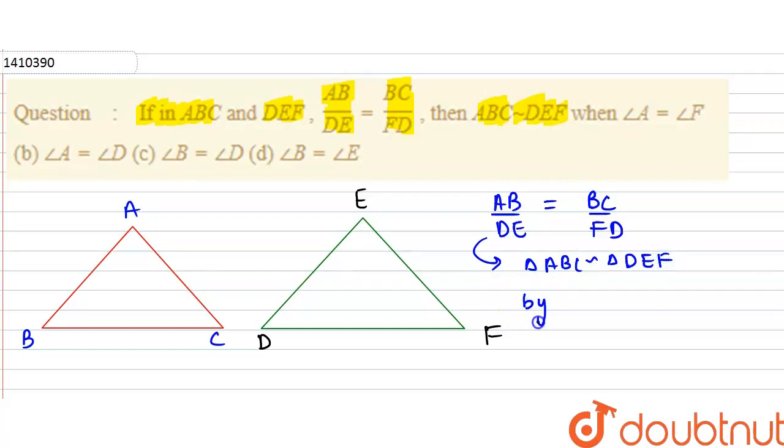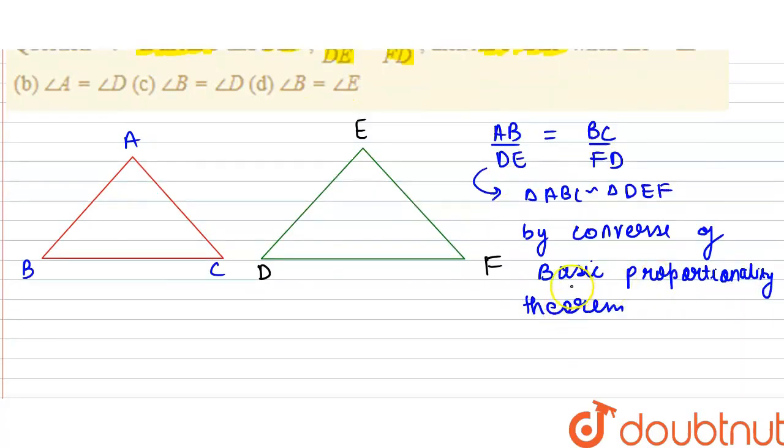Then, by Converse of Basic Proportionality Theorem, if we have the sides, then by Converse of Basic Proportionality Theorem we can say that Angle A is equal to Angle E,